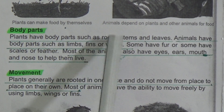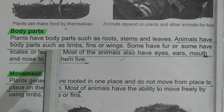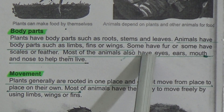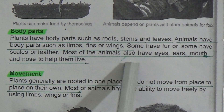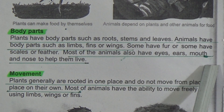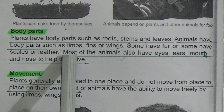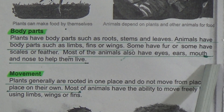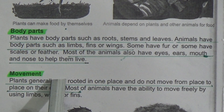Next topic: body parts. Plants have body parts such as roots, stems, and leaves — underline this line. Animals have body parts such as limbs, fins, or wings — underline this line. Some have fur, some have scales or feathers. Most animals also have eyes, ears, mouth, and nose to help them live — underline this line.